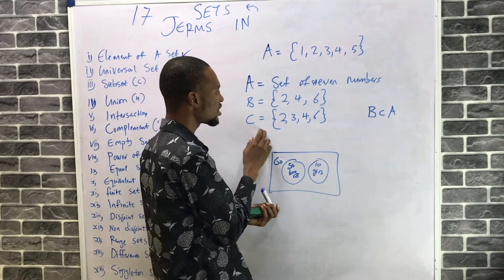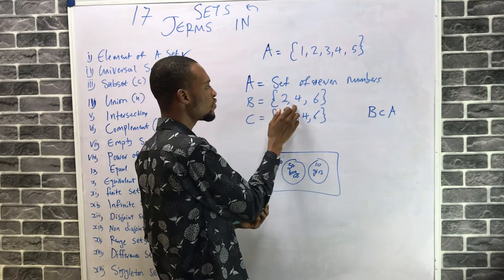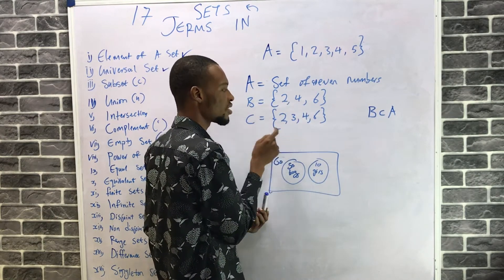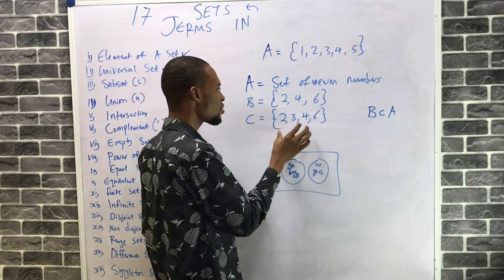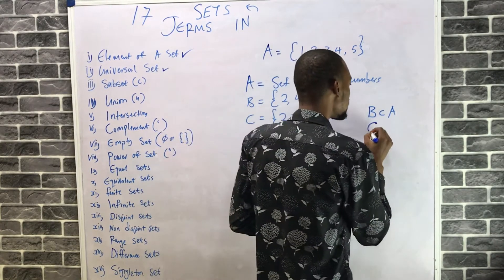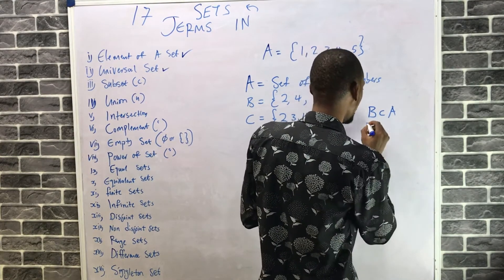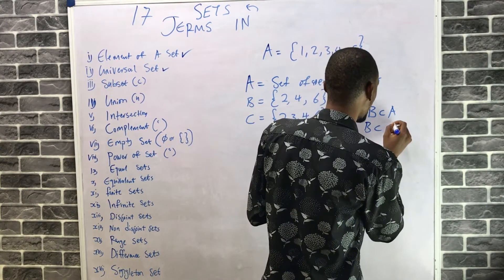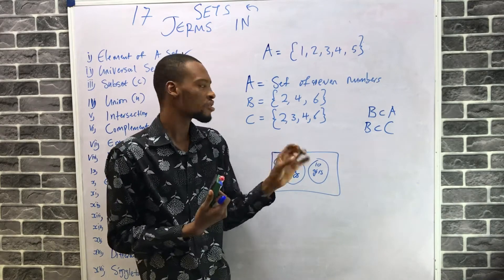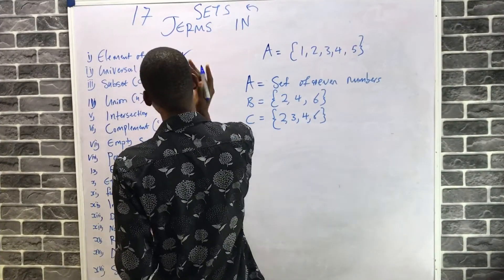Now look at this: if C is {2, 3, 4, 6} and B is {2, 4, 6}, everything in B is inside C and more. So C contains everything in B, meaning B is a subset of C. That's what a subset means.